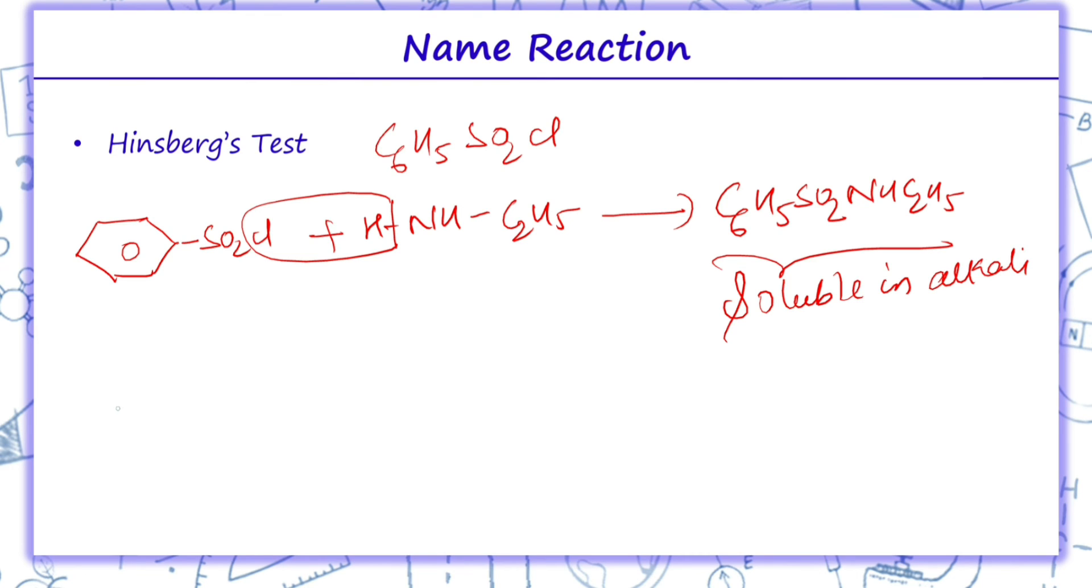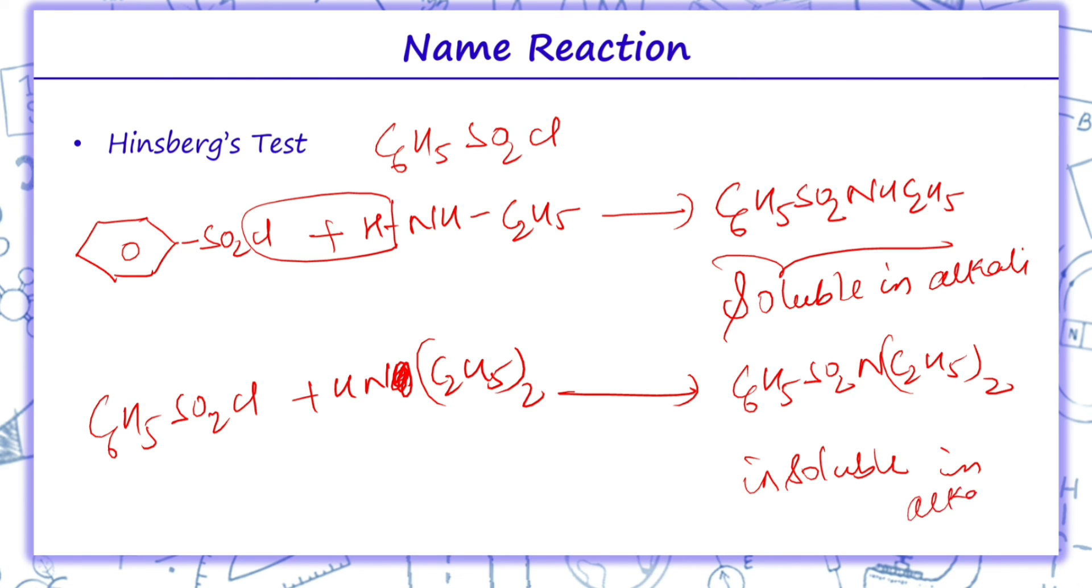Similarly, when we talk about secondary amine, when secondary amine reacts we get C2H5 whole twice. Here there is no hydrogen. They form C6H5SO2N(C2H5)2. Here we get N,N-diethyl benzene sulfonamide. This one is insoluble in alkali. So this is the test to distinguish between primary, secondary and tertiary amines.